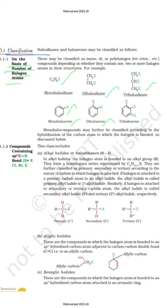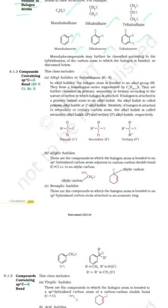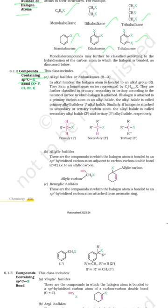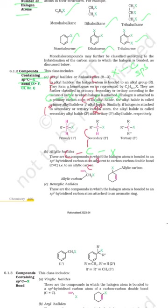The second classification involves compounds containing an sp3 C–X bond. Here, the halogen is bonded to a carbon that should be sp3. We classify these as primary, secondary, or tertiary. If the halogen-bearing carbon is connected to only one other carbon, it is primary. If connected to two other carbons, it is secondary. If connected to three other carbons, it is tertiary.